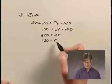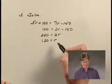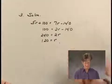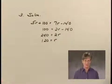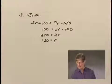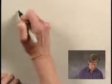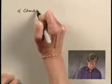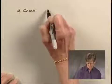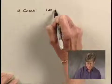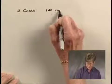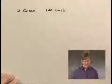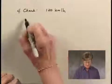We don't need to find D in this step since we're asked to find the speed of the plane in still air, which is R. We'll deal with the distance in the check. So let's go to the fourth step, which is to check the solution in the original problem. We're checking the plane's speed in still air of 120 kilometers per hour.